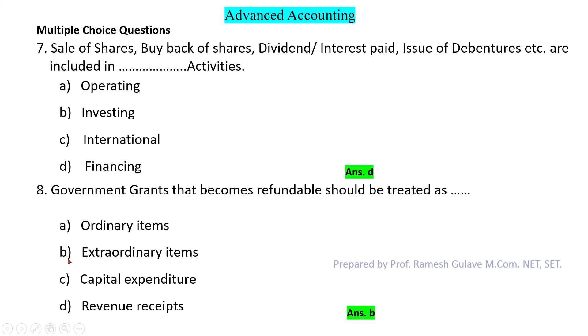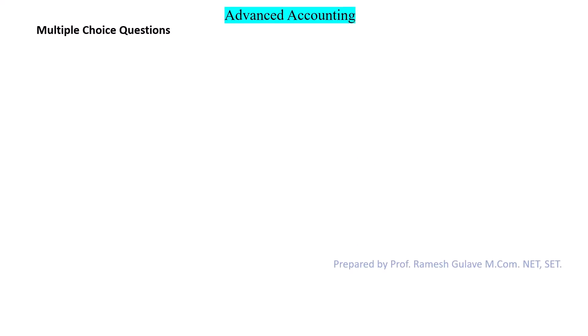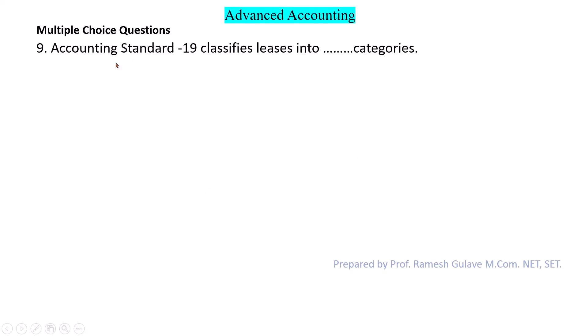Next question: Accounting Standard 19 classifies leases into how many categories? As per AS19, leases are of two types: financial lease and operating lease. So option A is the right answer — leases are classified into two categories.